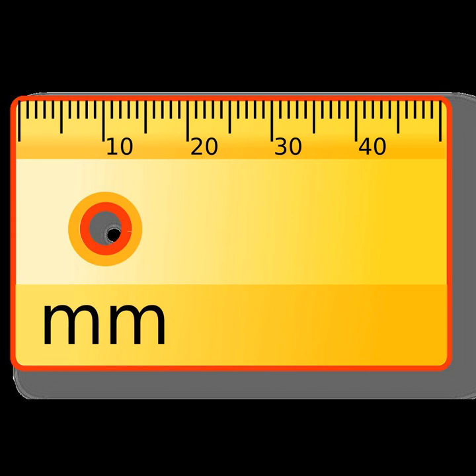For instance, 20 miles-square has an area equal to 400 square miles. A rectangle of 10 times 40 miles likewise has an area of 400 square miles, but it is not 20 miles-square. 1 square mile is equal to 4,014,489,600 square inches; 27,878,400 square feet; 3,097,600 square yards.